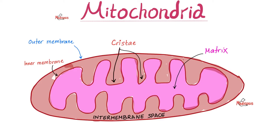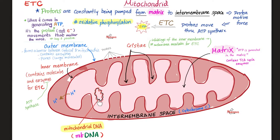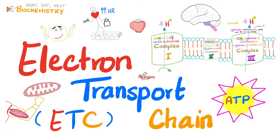Recall the structure of the mitochondrion. The outer part is the outer membrane, then the inner membrane. Between the outer and inner membrane is the intermembrane space. The infoldings are called cristae, which increase the surface area available for oxidative phosphorylation to help make more energy. The inner filling is the matrix, and that's where you find your mitochondrial DNA, abbreviated MT-DNA. The normal function of the mitochondrion is to make energy — lots of ATP — because of oxidative phosphorylation in the electron transport chain.